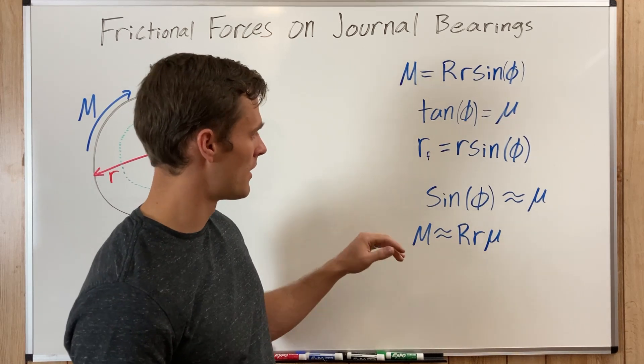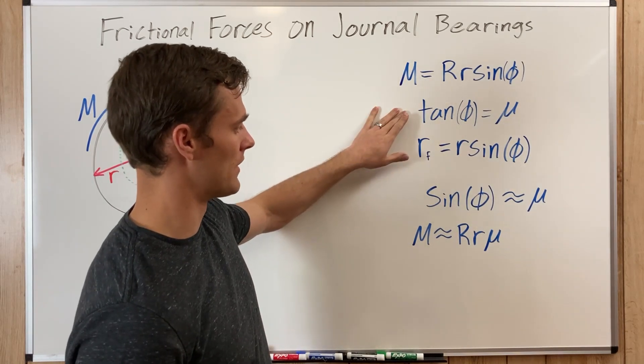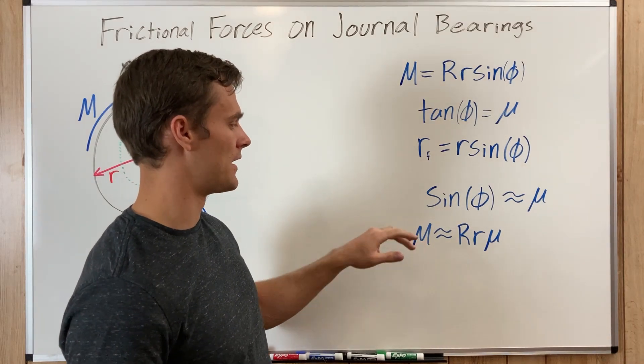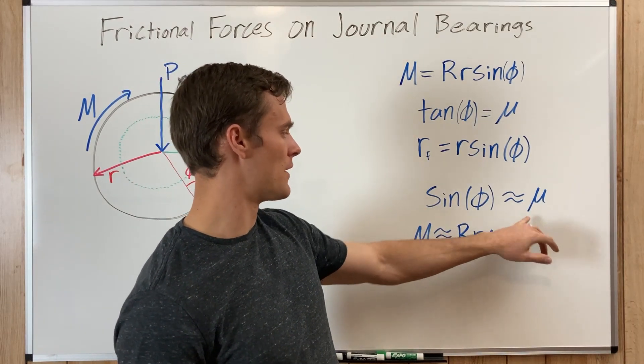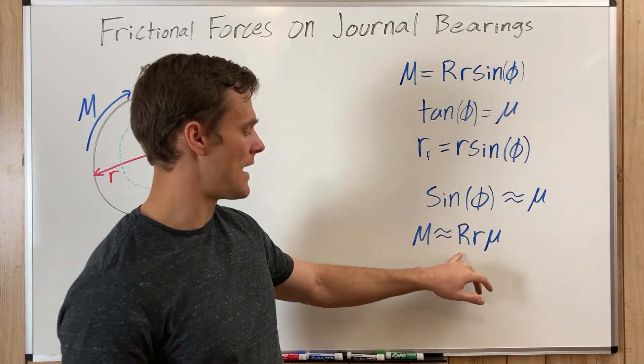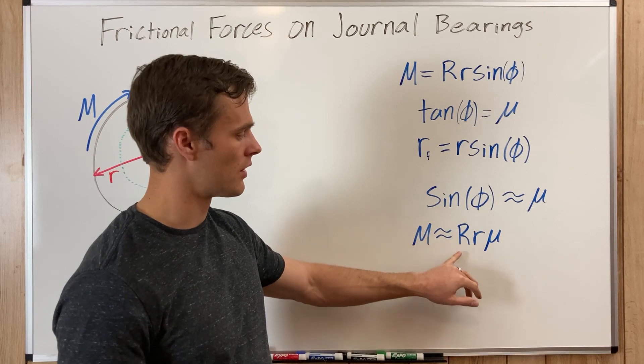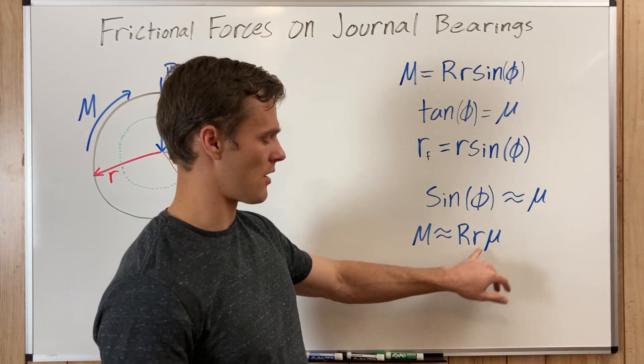I won't go into the derivation of that either, but it comes from this. And then using that we can plug mu in for sine phi, and we get that M approximate equals R times R times mu.